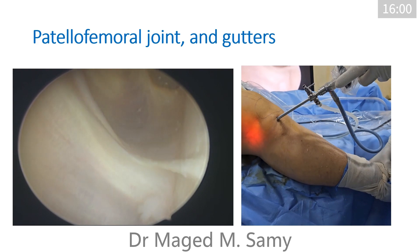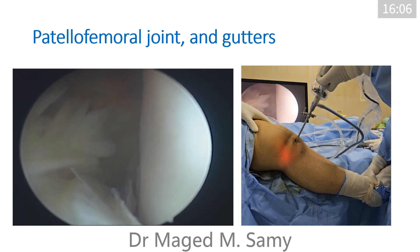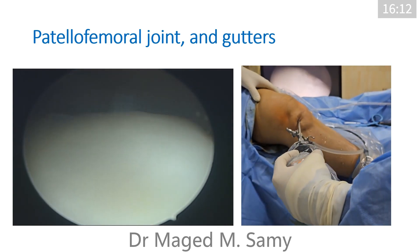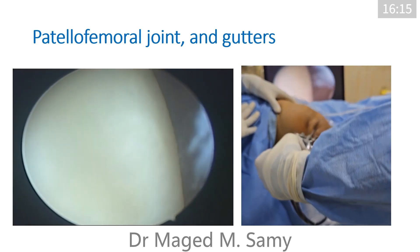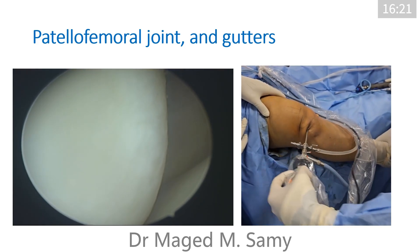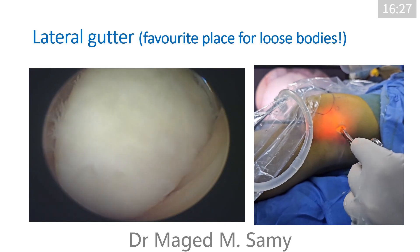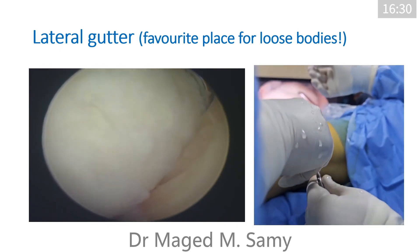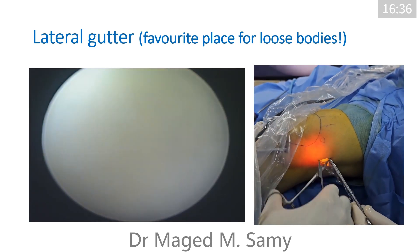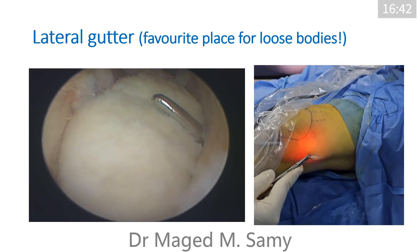Now we go into the lateral gutter all the way down to the lateral meniscus. The lateral gutter is a favorite place for loose bodies, so don't forget to inspect it. Then we inspect the medial gutter, all the way down to the medial meniscus. The lateral gutter is important — in a case of synovial chondromatosis with multiple loose bodies, huge loose bodies were hiding in the lateral gutter. If you don't properly inspect the lateral gutter, you will miss loose bodies.